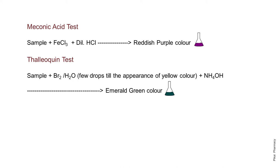The meconic acid test is done for the identification of opium alkaloids. The reagents are a 5% aqueous solution of ferric chloride and dilute hydrochloric acid. When the sample reacts with ferric chloride and dilute hydrochloric acid, it gives a reddish-purple color. This reddish-purple color indicates a positive test, confirming the sample contains opium alkaloids.